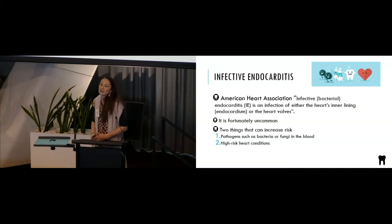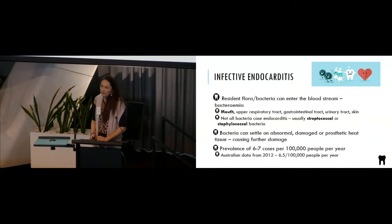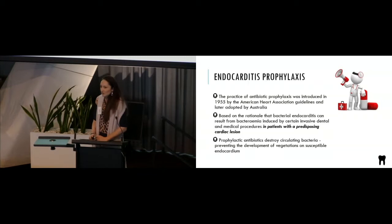And when we go to infective endocarditis, just got a definition there, but it just talks about when we get infection of either the heart's lining or the heart valves. It is fortunately quite uncommon, but there's two things that can increase our risk. So having pathogens in the blood, but also high-risk heart conditions. And so we have resident flora in our mouth, and they can enter our bloodstream doing everyday things, chewing, brushing teeth and whatnot. But one thing that can increase it is having an invasive dental or medical procedure, which is when we'll talk about our prophylaxis coming up. But the bacteria can settle on the abnormal or damaged prosthetic or prosthetic heart tissue, and then can cause further damage. It is quite a rare complication, but it's one with dentistry that we are aware of, and we will often look at endocarditis prophylaxis.